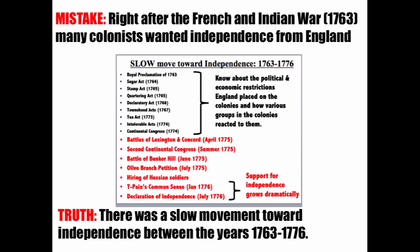Right after the French and Indian War, many colonists wanted independence from England — that is false. There was a slow movement towards independence between 1763 and 1776. Everyone hears 'French and Indian War' and thinks taxes then independence, but history is not that simple. Yes, taxes followed the war and the relationship between Britain and the colonies became strained, but it took a lot of things to happen to get to the American Revolution. Shots in 1775 were fired at Lexington and Concord and they were still trying to work things out.